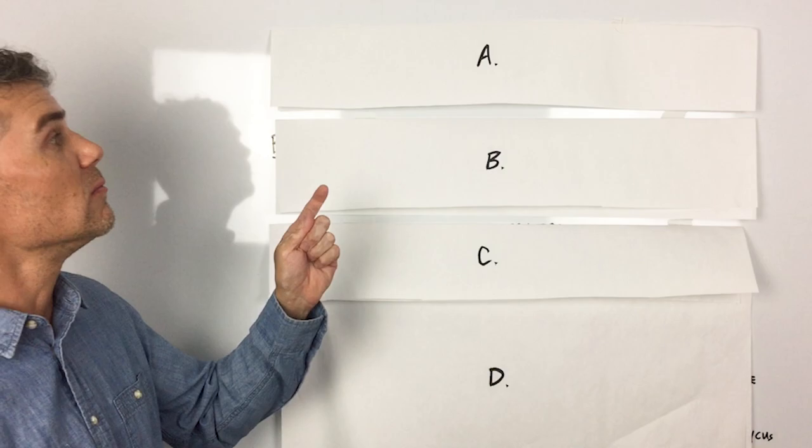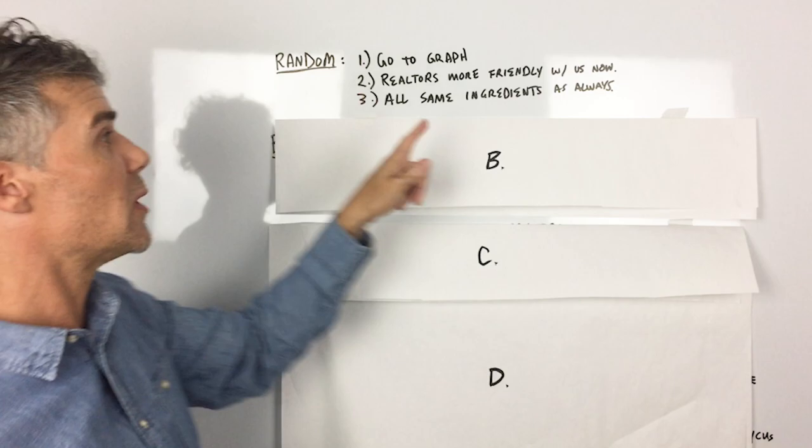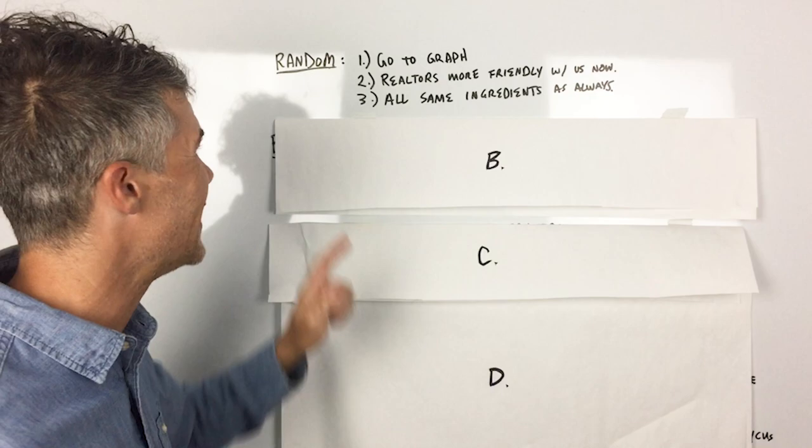The first letter, A, we're going to talk about some random things. We already talked about that graph that shows that the market is slowing down a little bit, which corresponds to what we see around the country, except in a few areas. We'll talk about that here down in letters C and D.